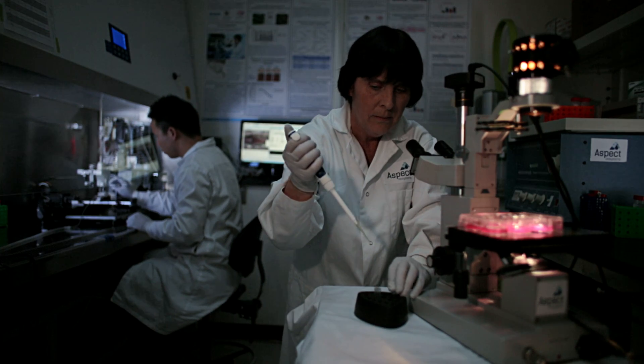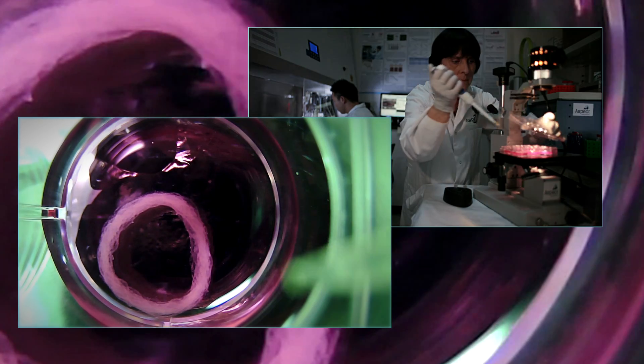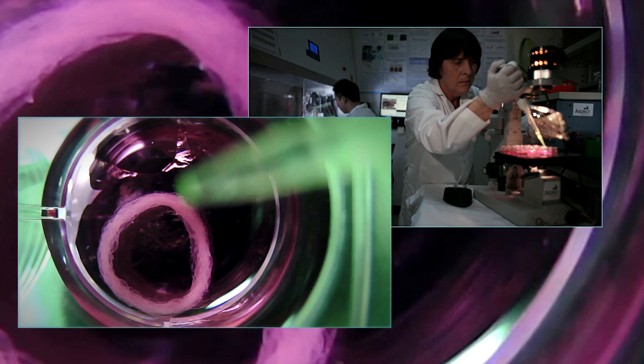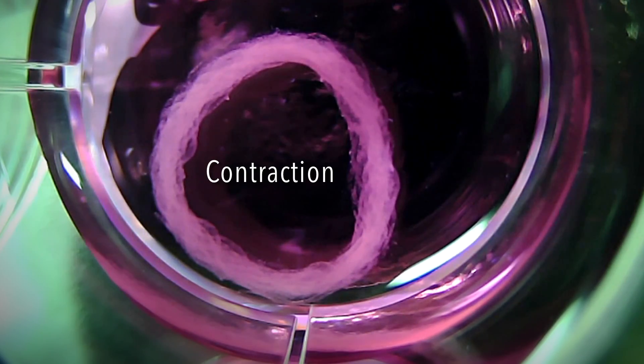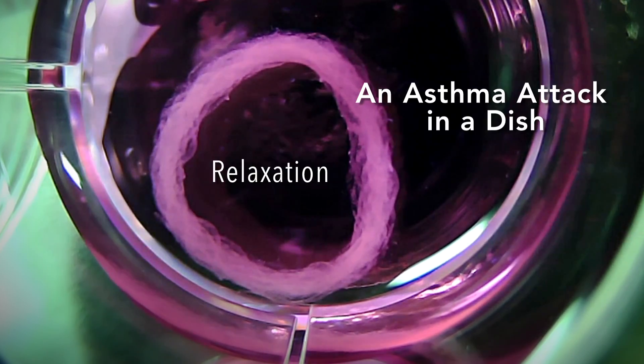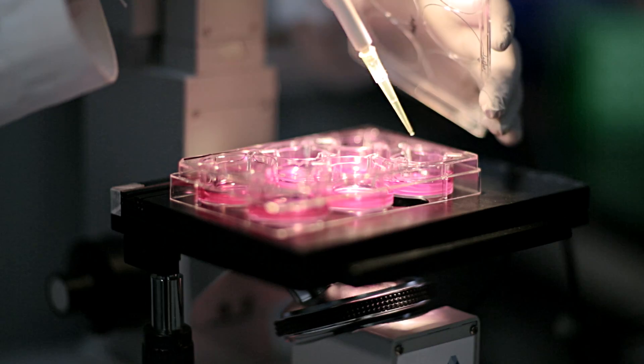The tissues we build have highly physiological functions. Here is a 3D bioring made of airway smooth muscle cells contracting in response to histamine and relaxing in response to salbutamol, recreating an asthma attack in a dish.